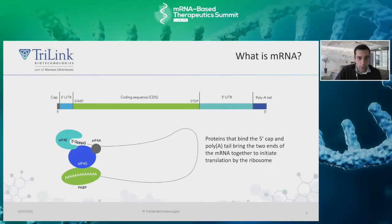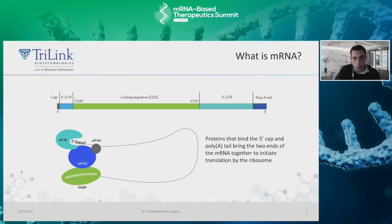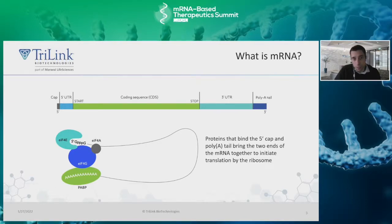The 3' UTR and poly-A tail mainly aid in stability of your mRNA when introduced to the cell. As you can see in this diagram, proteins bind the 5' cap and poly-A tail of the mRNA together to initiate translation by the ribosome. The poly-A tail acts as a sort of timer for translation — when bound to the ribosome it is being degraded by enzymes in the cell, and when completely chewed up, the mRNA becomes significantly less stable, altering connection to the ribosome and the efficiency of translation.